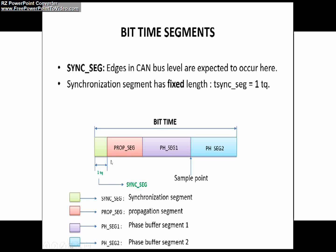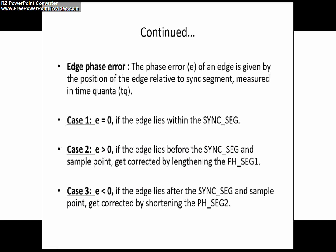So the edge phase error E will be less than 0. Now you may ask how these errors will be corrected or resolved in a CAN network. These errors are overcome in a CAN network with the help of phase buffer segment 1 and phase buffer segment 2, by lengthening and shortening of the two phase buffer segments.